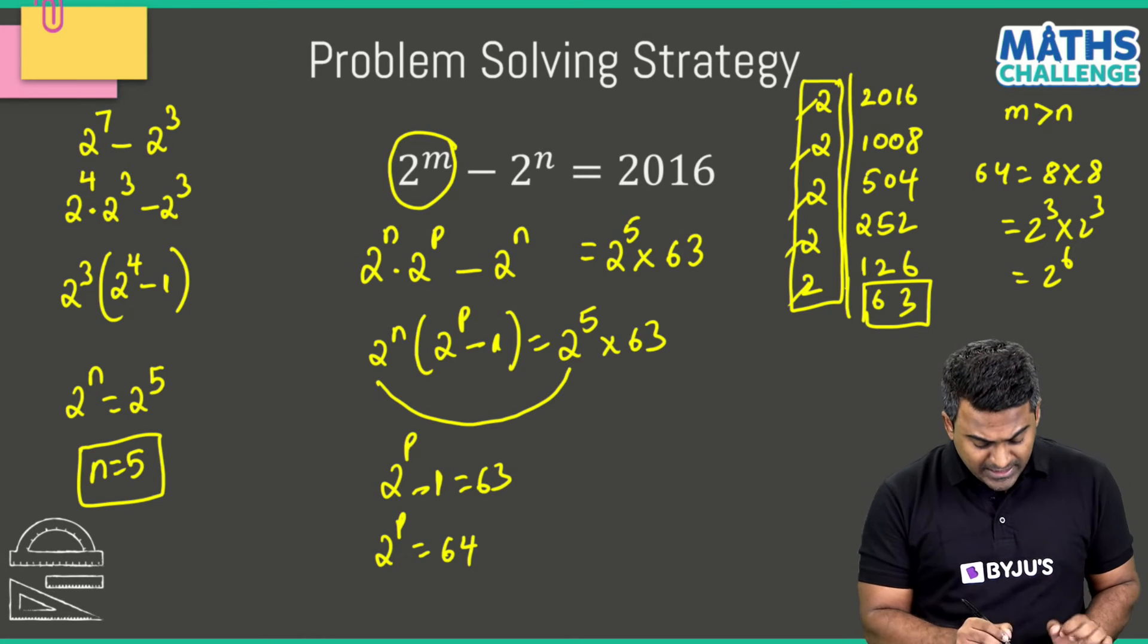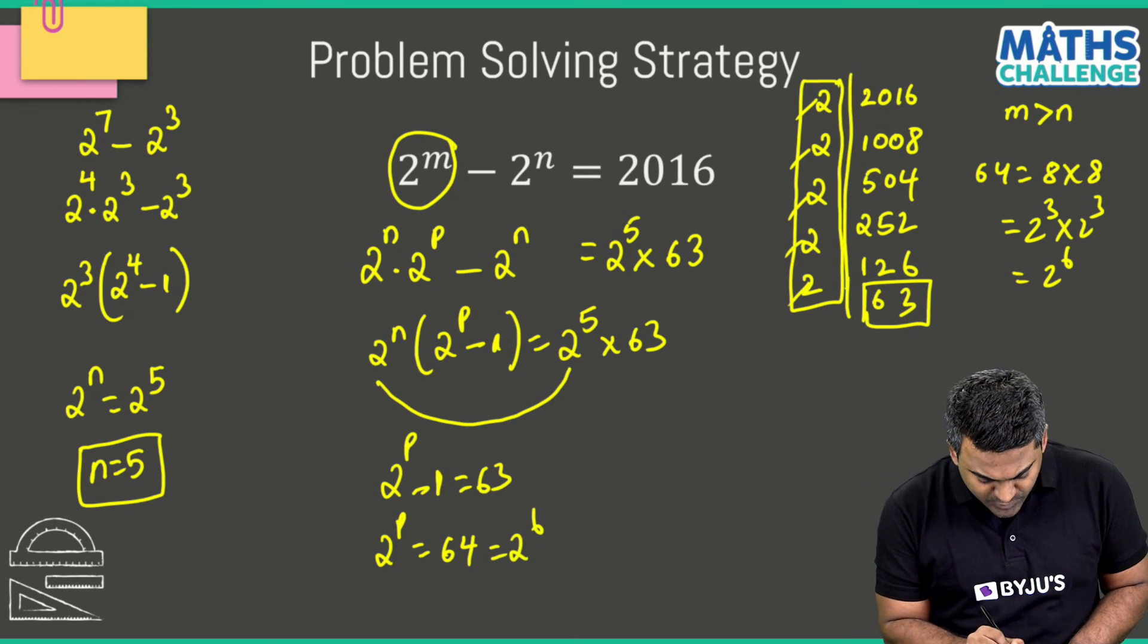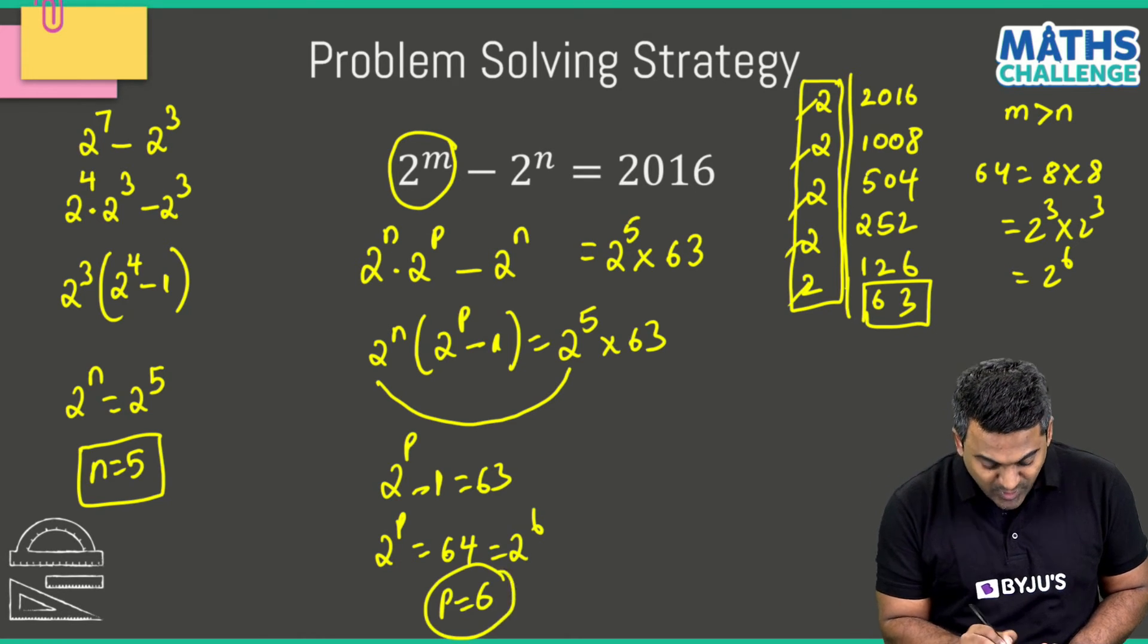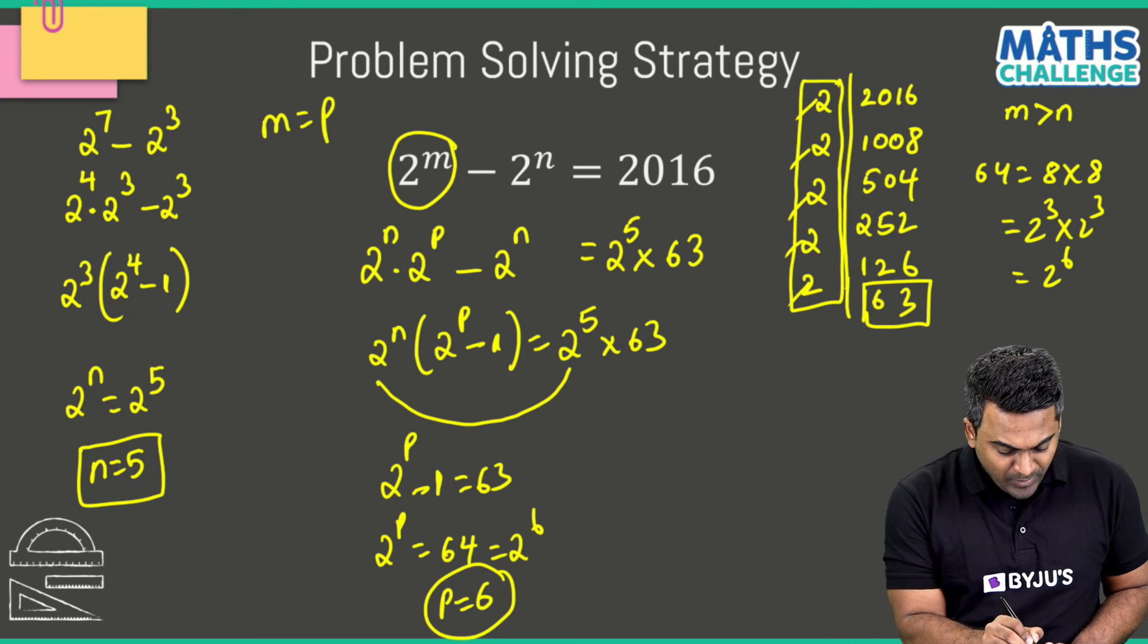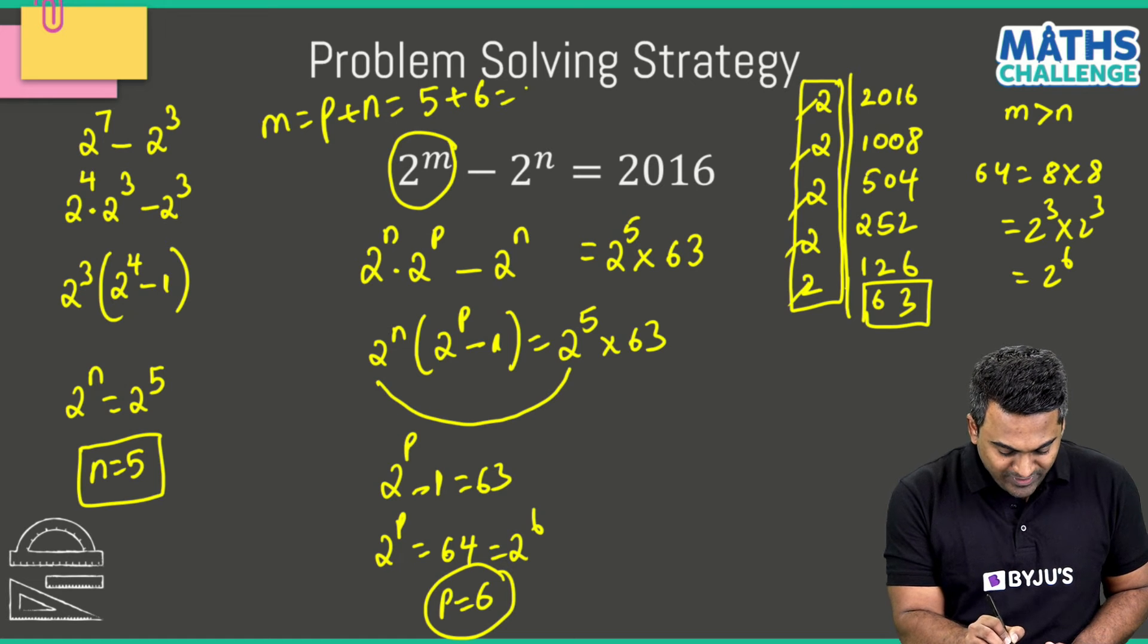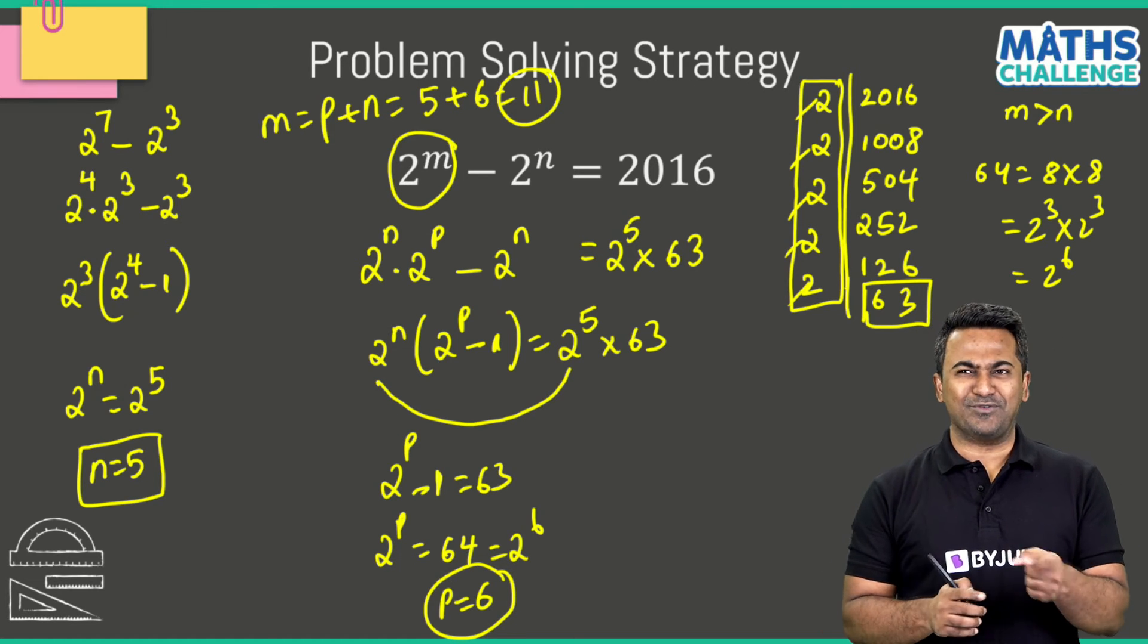So this becomes how much? 2 to the power 6. So this is 2 power 6, which means p value here is going to be 6. And you all know what m value was, right? M value was how much? P plus n. I know both p and n now. And there you go, m value here is going to be 11.